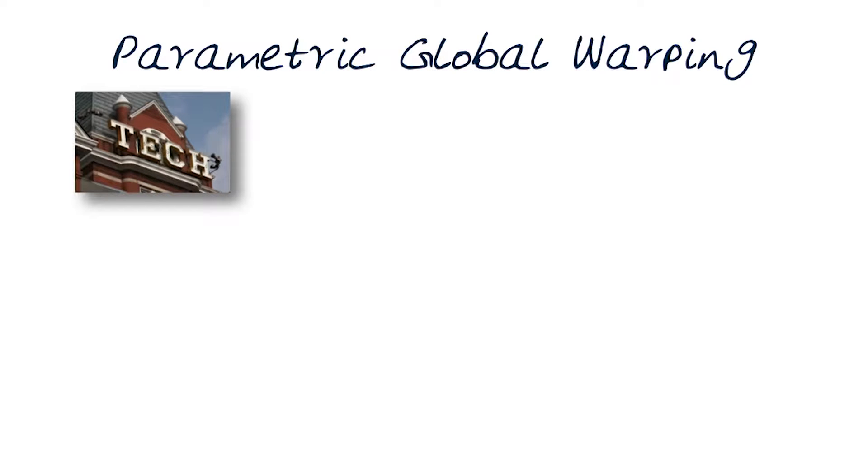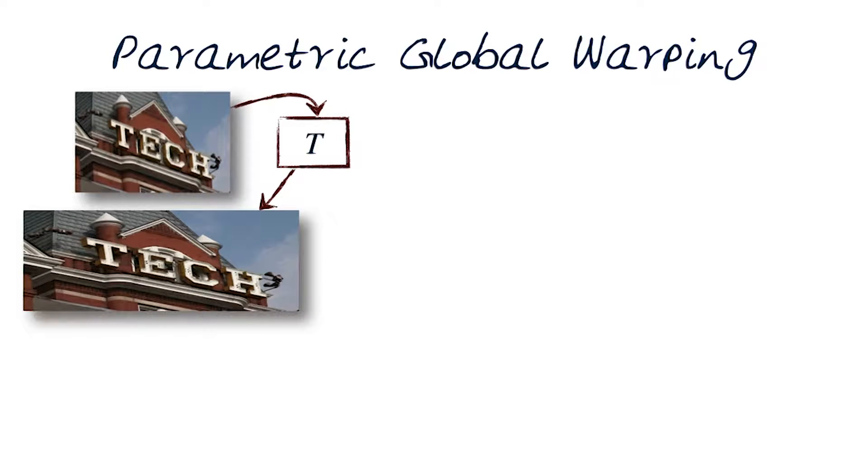Now what we're interested in is asking the question, given an image like this, how would we transform it to an image like this? Here I'm basically showing a little bit of scaling in one direction only.